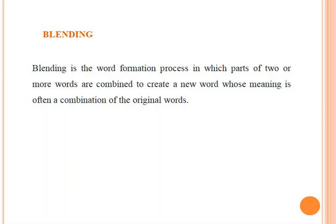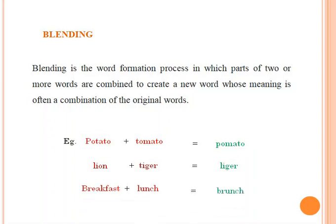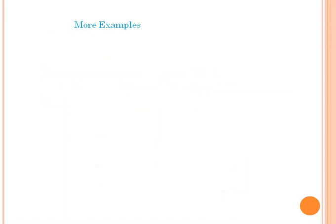For example, 'potato' plus 'tomato' gives us a new word 'pomato.' Next, 'lion' plus 'tiger' gives us the new word 'liger' — a combination of lion and tiger. 'Breakfast' plus 'lunch' gives us 'brunch.' Brunch is a blended word from breakfast and lunch. Let's see more examples of blending.